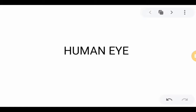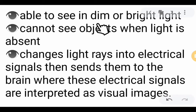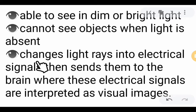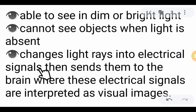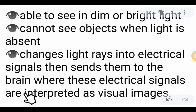Hello everyone. This lecture video is all about the parts of the human eye and its function. The eye is able to see in dim or bright light, but it cannot see objects when light is absent. Light is important because our eye changes those light rays into electrical signals, then sends them to the brain where these electrical signals are interpreted as visual images.